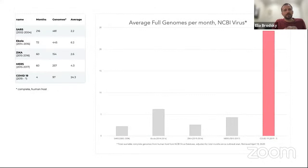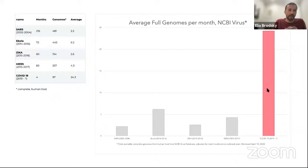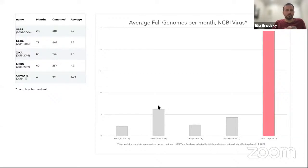If we just take a look at the current pandemic, the number of genomic sequences associated with SARS-CoV-2 has been growing exponentially at a much faster pace than many other viruses in previous pandemics. Comparing genomes per month available on NCBI for SARS-1, it was just a few genomes per month. For Ebola, there was a dramatic increase — over five genomes per month across the 2014 to 2016 pandemic range.